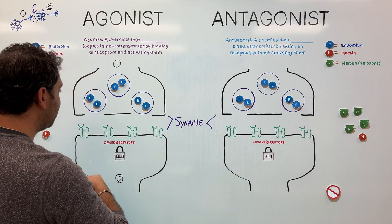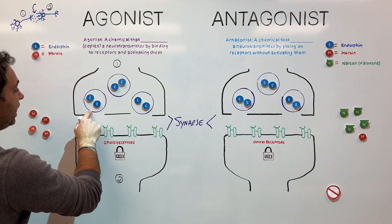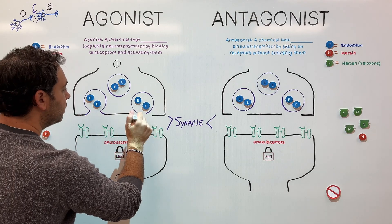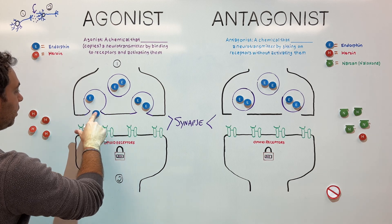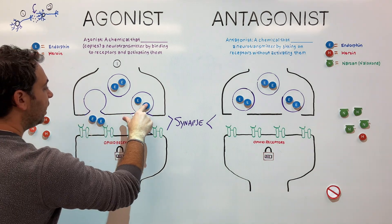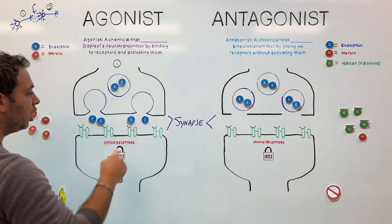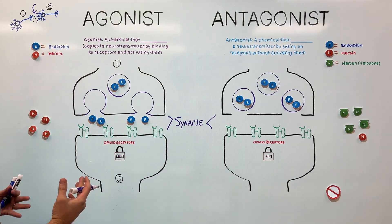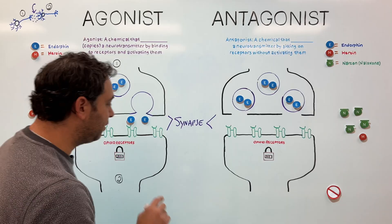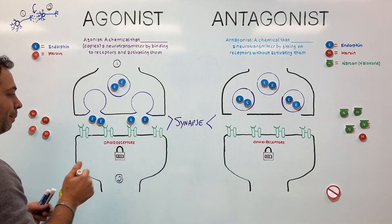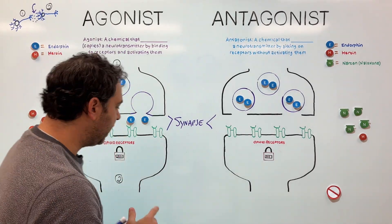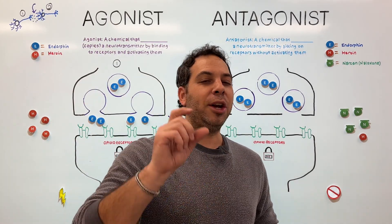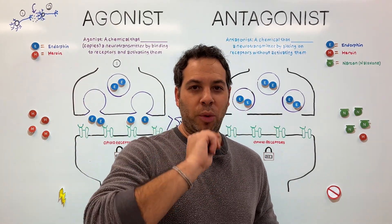Once that action potential hits the end of the neuron, these little vesicles are going to fuse to the membrane. All these chemicals are going to be released into the synaptic gap. Now where do they go? They have to attach themselves and bind to these receptors. But here's the problem — these receptors have a very specific code or password, and only specific chemical messages know that code.